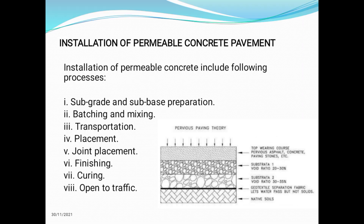These are the installation steps of permeable concrete pavement. Step 1 is sub-grade and sub-base preparation. Step 2 is batching and mixing. Step 3 is transportation of goods. Step 4 is placement of goods. Step 5 is joint placement, including expansion joints and construction joints.